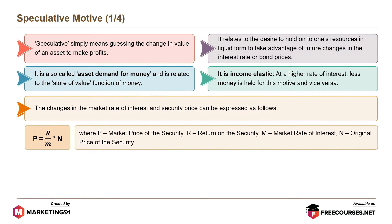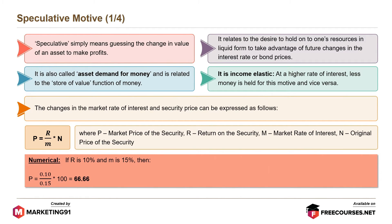The changes in the market rate of interest and security price can be expressed as P equals R divided by M into N, where P is market price of security, R is return on the security, M is the market rate of interest, and N is the original price of the security. For example, if R is 10% and M is 15%, then P equals 0.10 divided by 0.15 into 100, which equals 66.66.